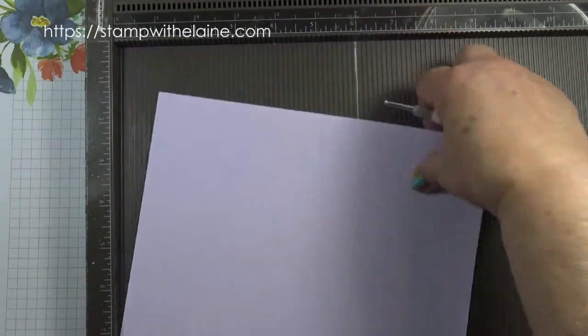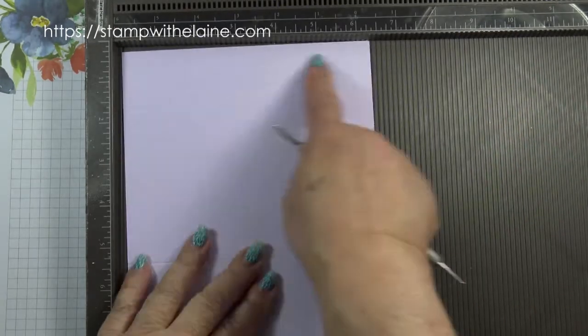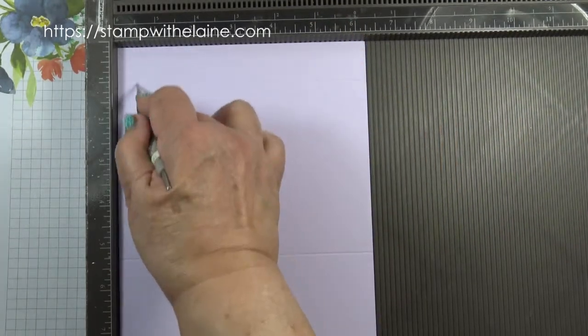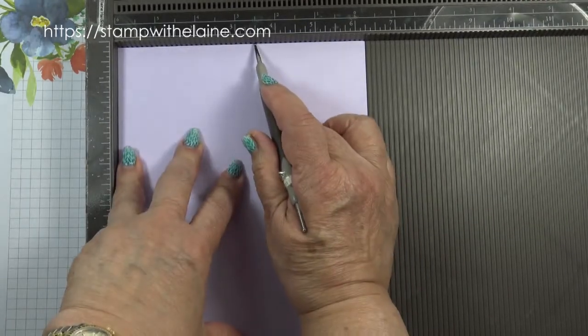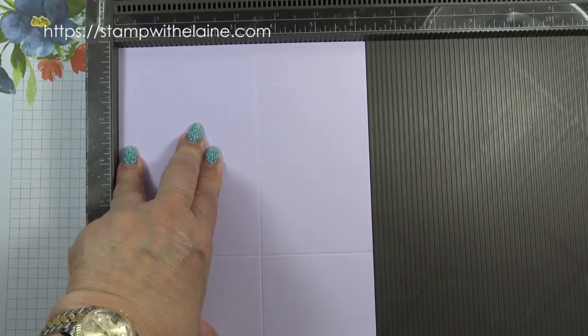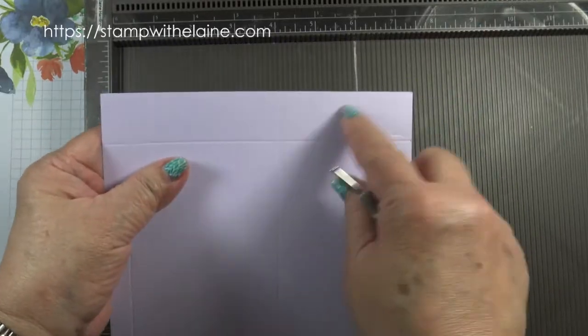Take the cardstock clockwise so that the short side is now on the top, and you score at 1/2 inch and 3 1/2 inches. The 1 inch is at the top.